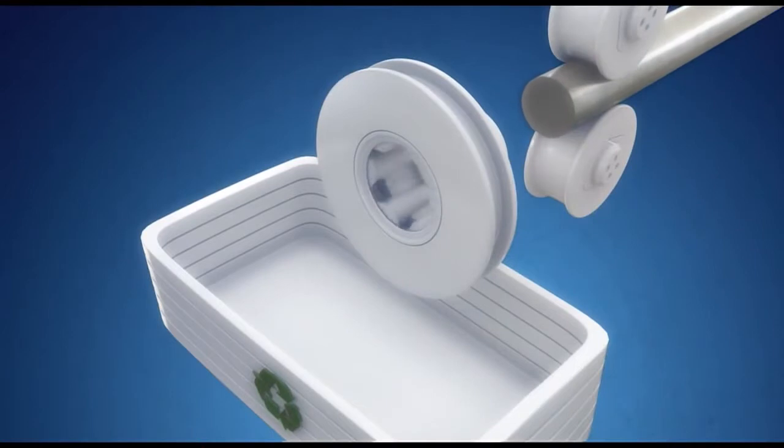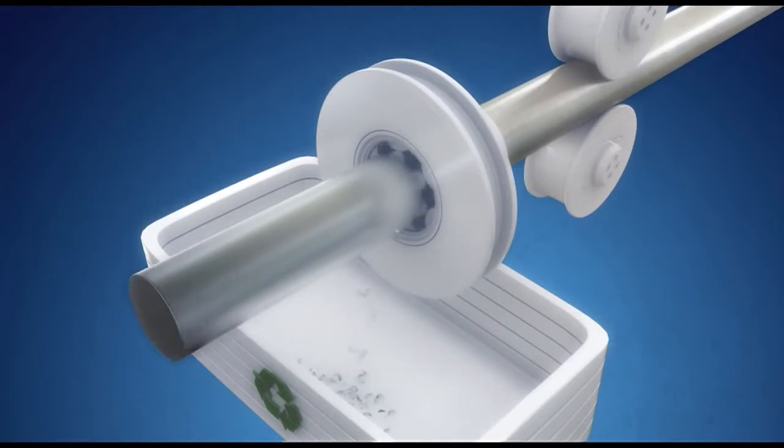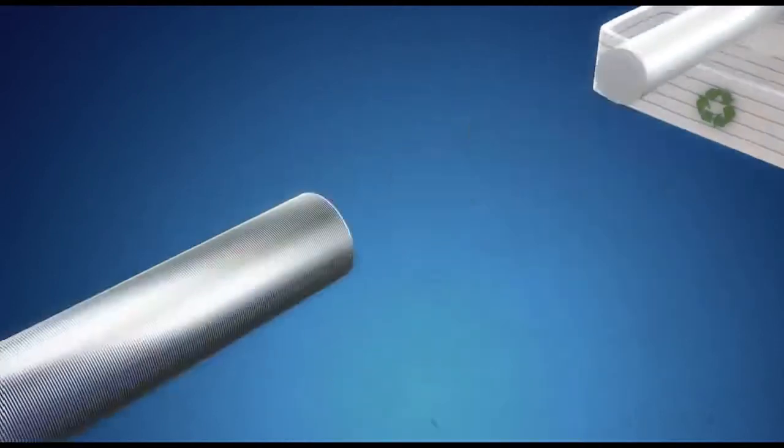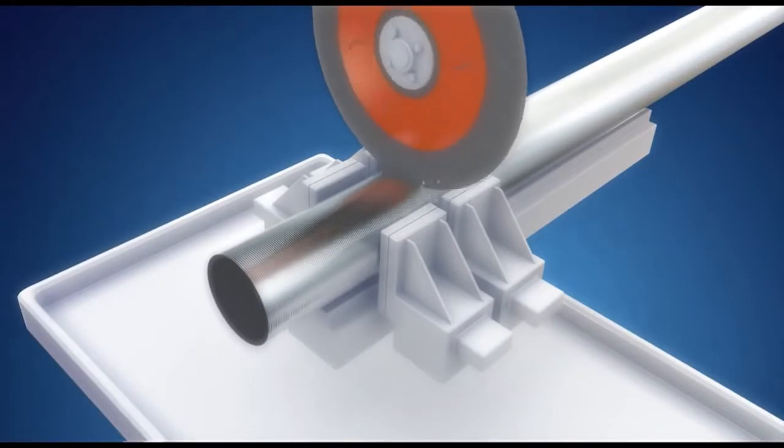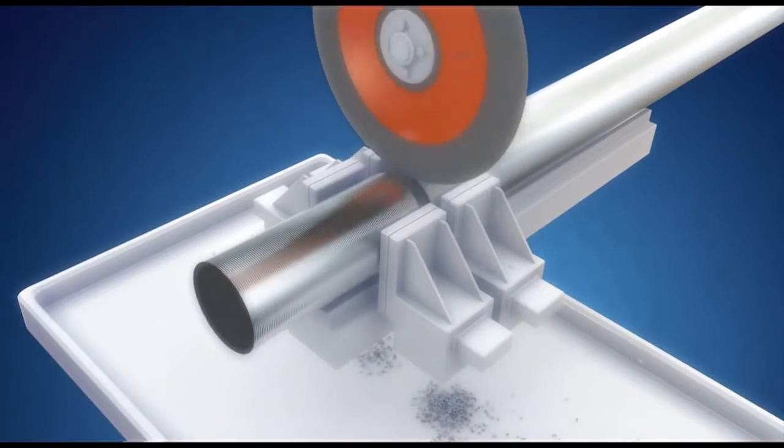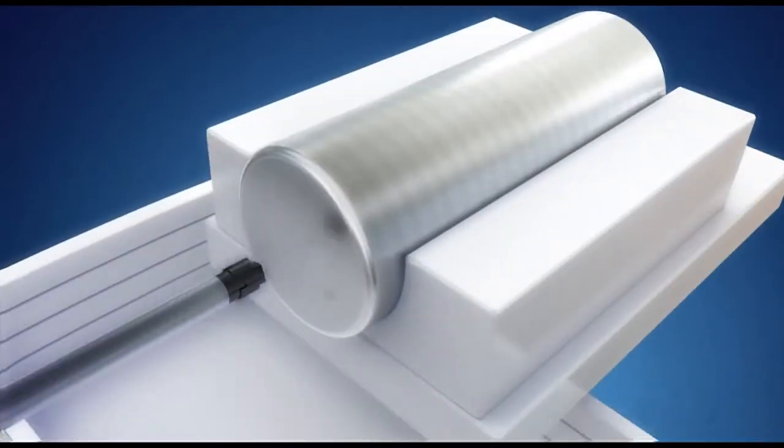Before the bar steel is used for tube manufacturing, its chemical composition is confirmed in a spectrometer test. To prepare extrusion billets, the bars are peel turned, cut and deep bored.